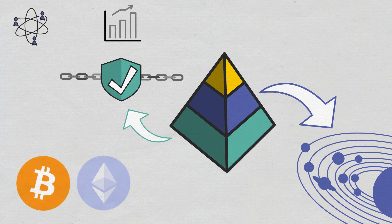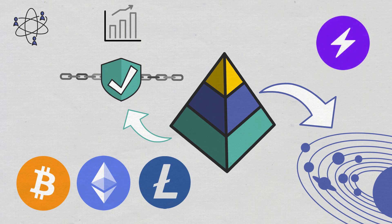While Bitcoin, Ethereum, and Litecoin are layer 1 blockchains, Lightning Network is a layer 2 solution that was built to increase the transaction speeds on the Bitcoin network.